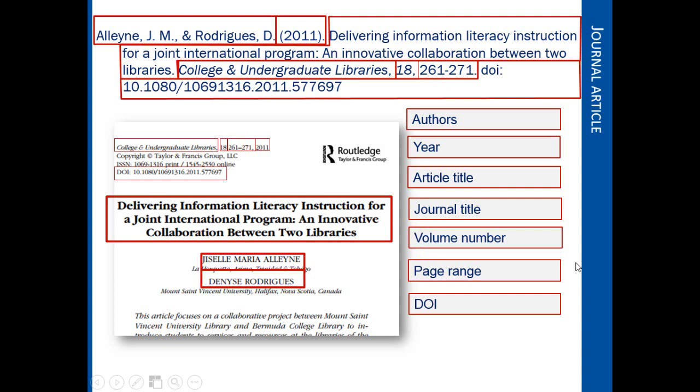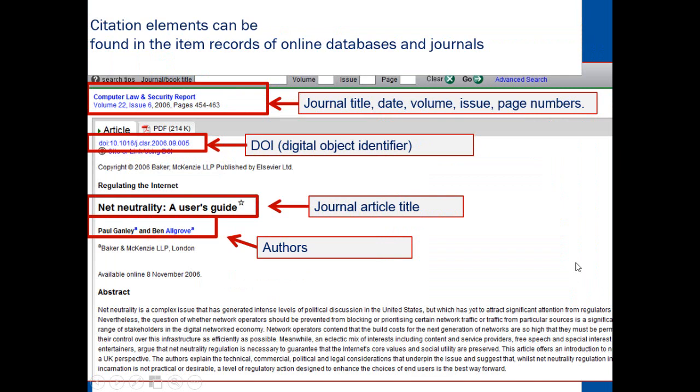Not all articles have a DOI, so check the APA guide for further instruction. The citation elements can also be found on item records of online databases and journals, so that's a good place to check if you're missing any information.